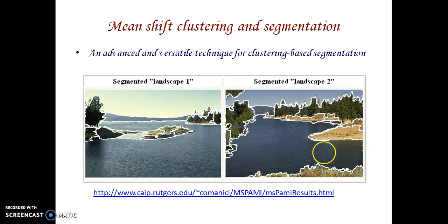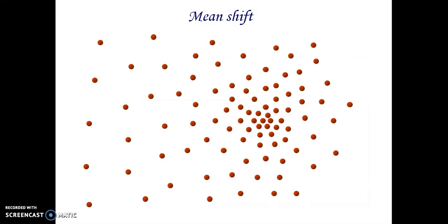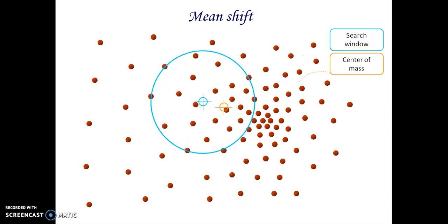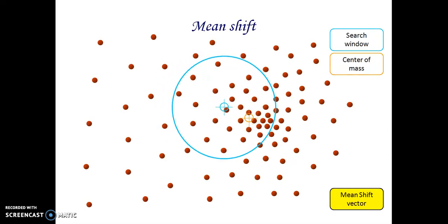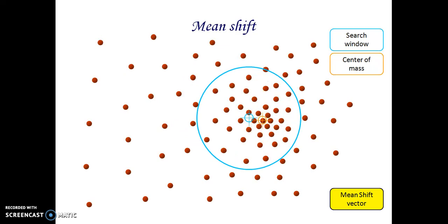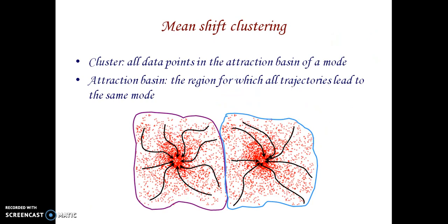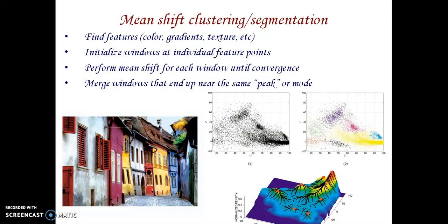Next is the mean shift clustering algorithm. This is the segmented landscape image. We apply moves to local maximum density in feature spaces. We identify the search window and the center of mass. I compute the mean shift vector and move the search window to the center of mass. Afterwards, I compute the center of mass until I get the desired results. I find features like colors, gradients, and textures, initialize windows with initial feature points, and perform mean shift for each window until convergence, merging windows that end up near the same peak.